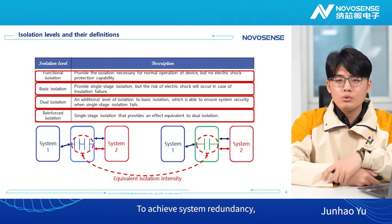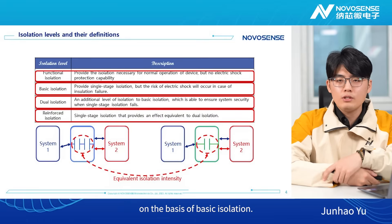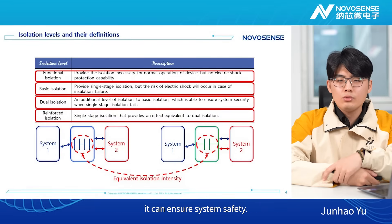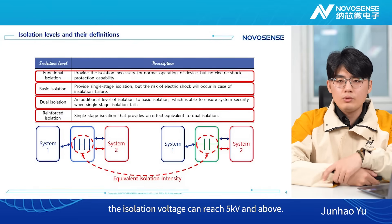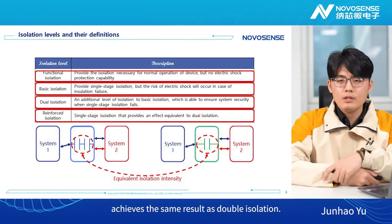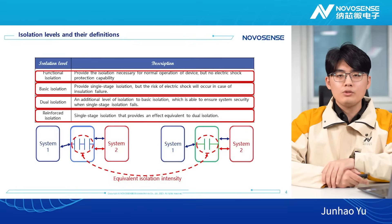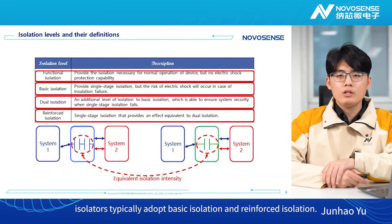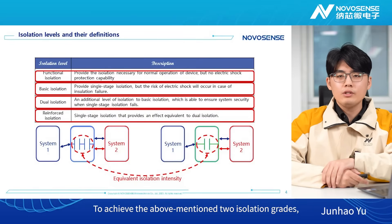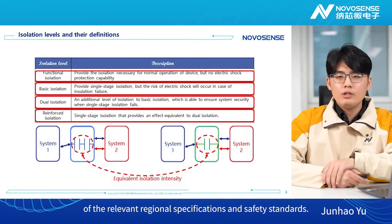To achieve system redundancy, double isolation provides an additional isolation layer on the basis of basic isolation. Therefore, when the single-stage isolation fails, it can ensure system safety. With this isolation technology in place, the isolation voltage can reach 5 kV and above. Reinforced isolation as single-stage isolation achieves the same result as double isolation. Currently, isolators typically adopt basic isolation and reinforced isolation. To achieve these two isolation grades, the properties of an isolator should meet the requirements of the relevant regional specifications and safety standards.